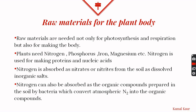Plants also need raw materials other than those for photosynthesis and respiration, such as nitrogen, phosphorus, iron, and magnesium. Nitrogen is the most important, as it is used to make proteins and nucleic acids. Nitrogen is absorbed in two forms: as inorganic salts — nitrates or nitrites dissolved in soil — or as organic compounds manufactured inside the soil with the help of bacteria and then absorbed by plant roots.